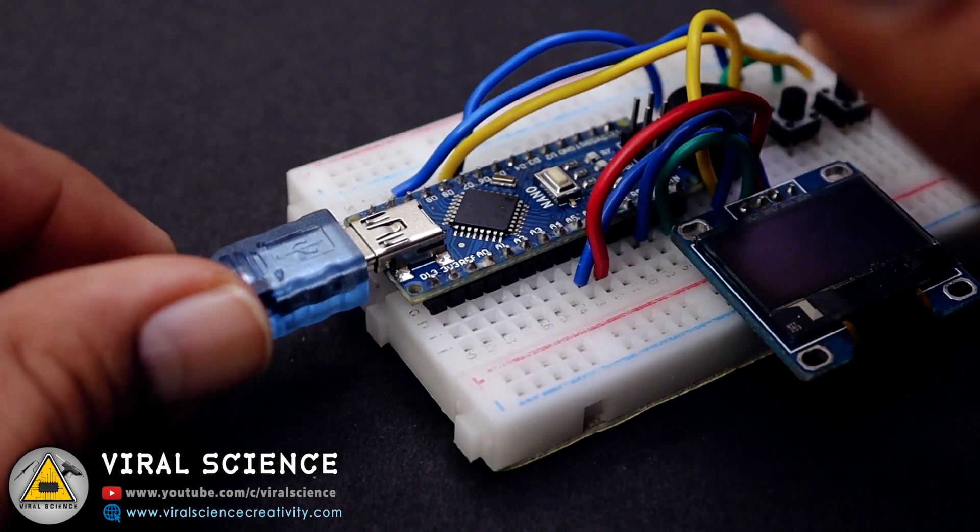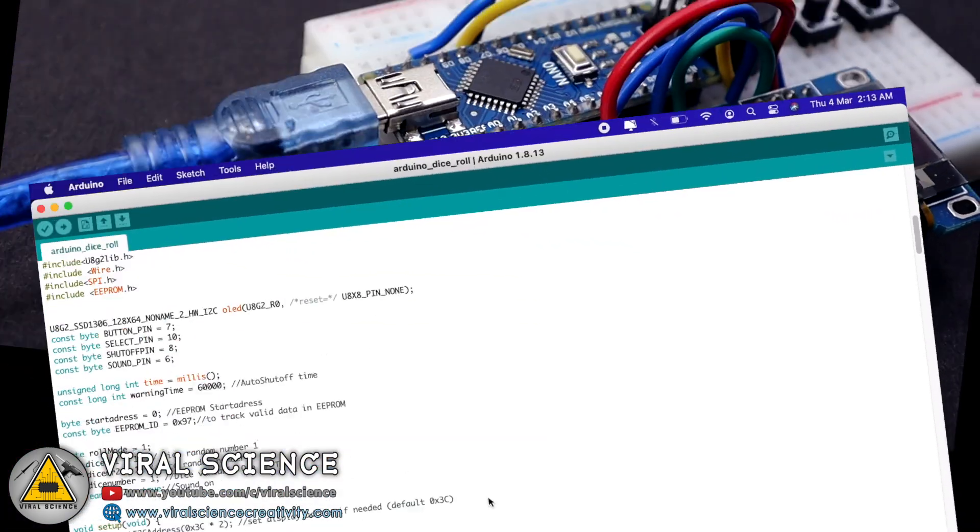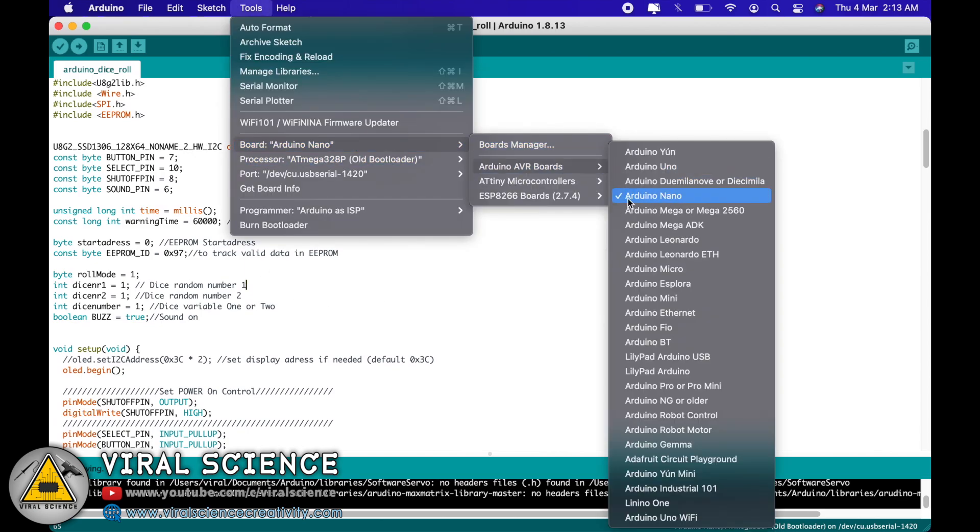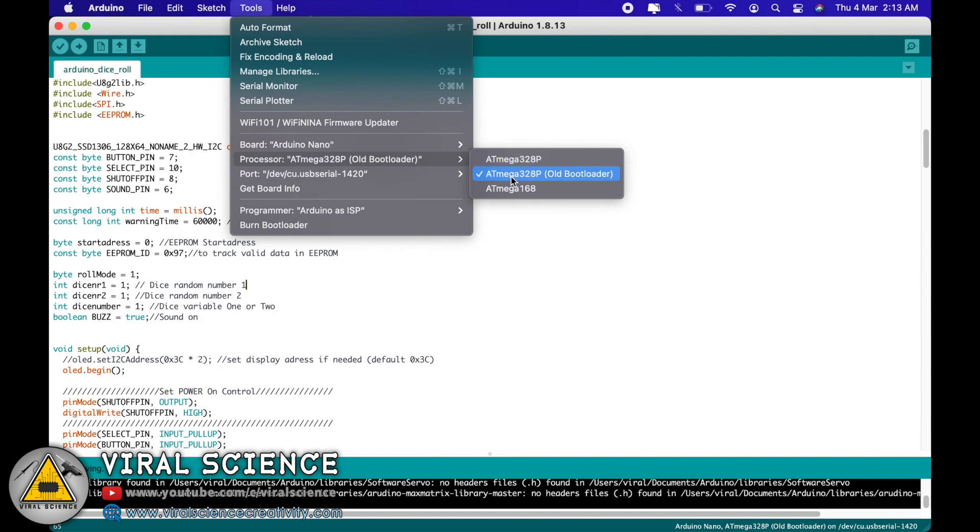After completing connections, connect your Arduino with your computer. Open this code, select the board that is Arduino Nano, select as old bootloader, select the port, and simply upload the code.